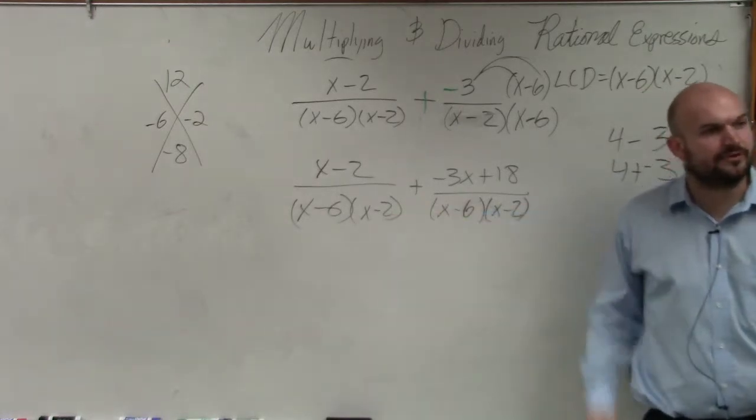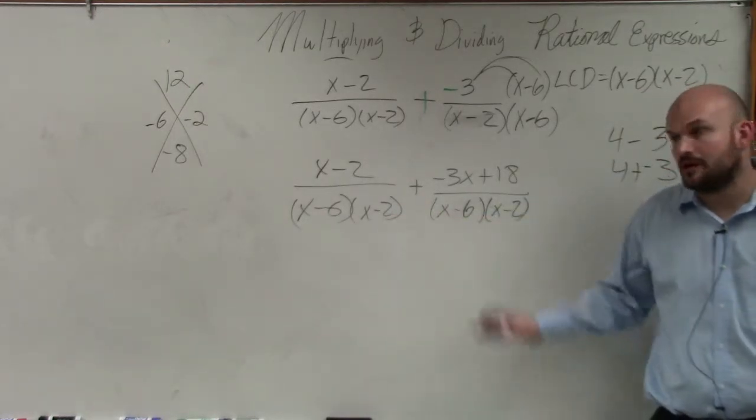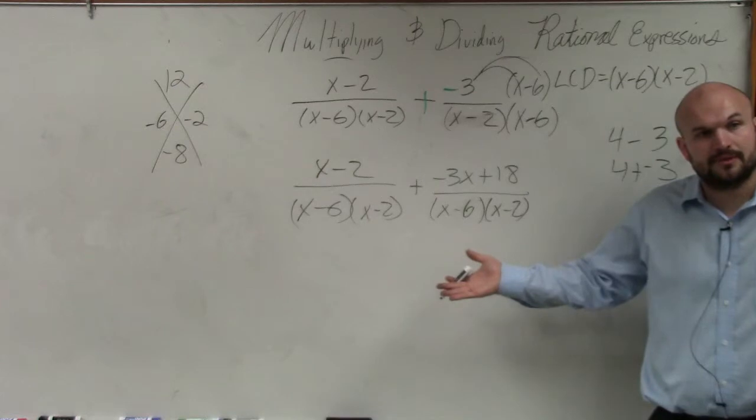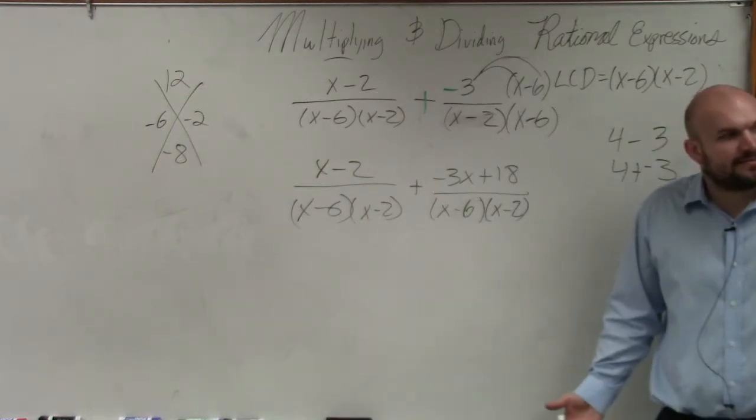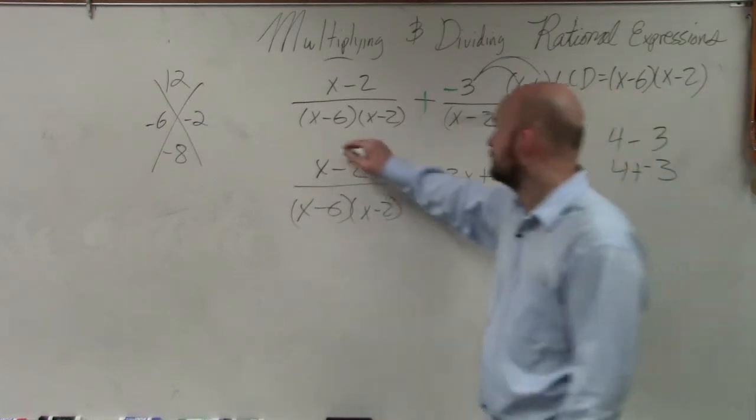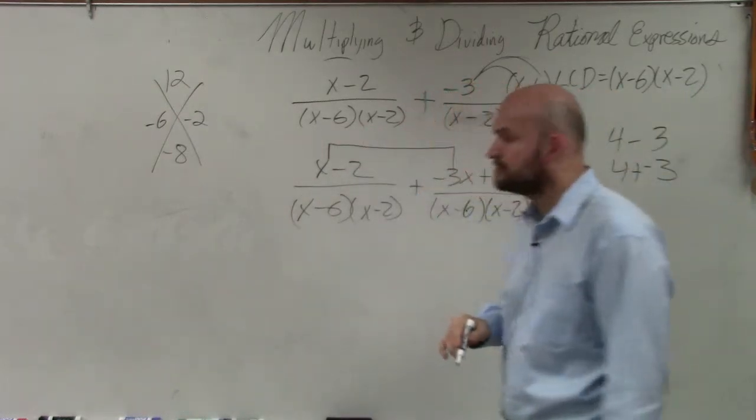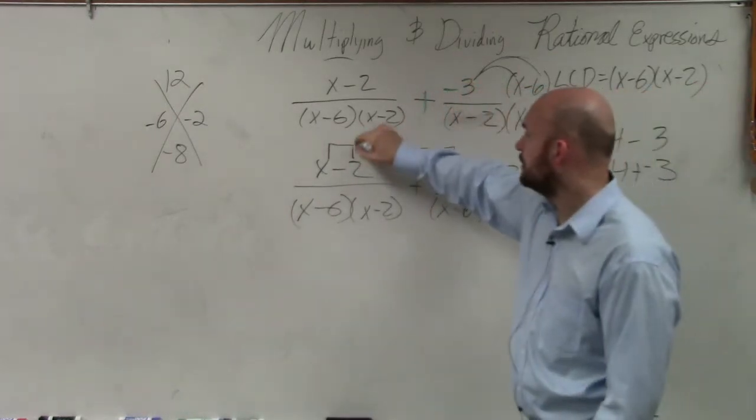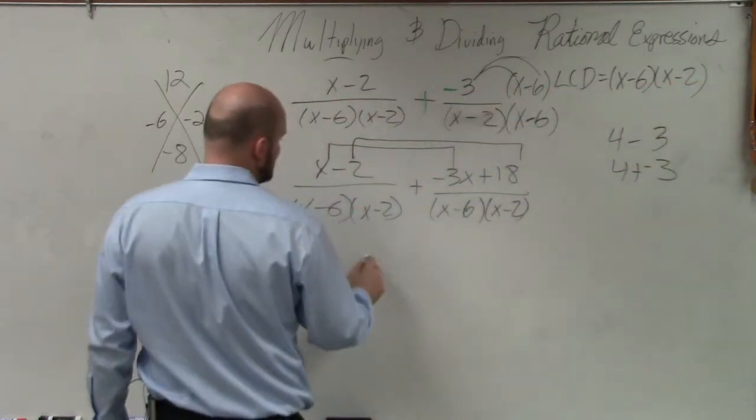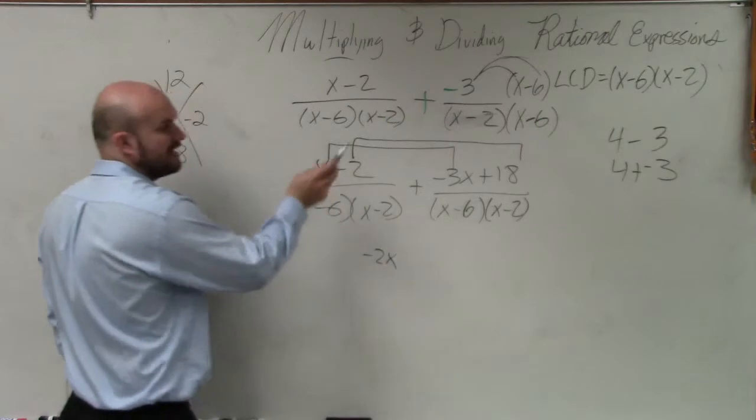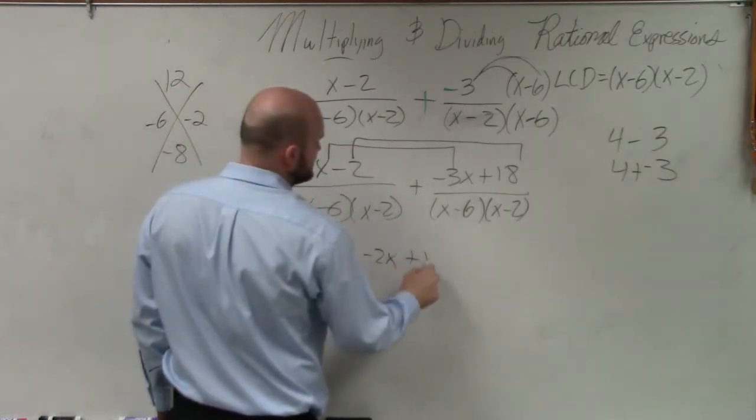Do you guys see now how we have two operations? I'm sorry, we have the denominators are the same. So now that we have the denominators are the same, I can just add my numerators. So I can add the x's and I can add the numbers. So x minus 3x is negative 2x. Negative 2 plus 18 is positive 16.